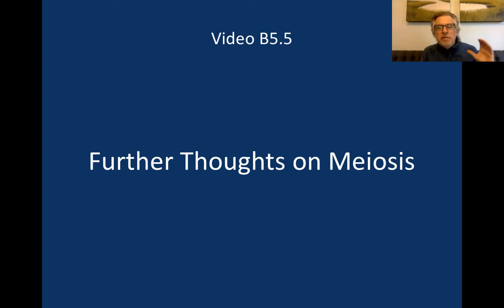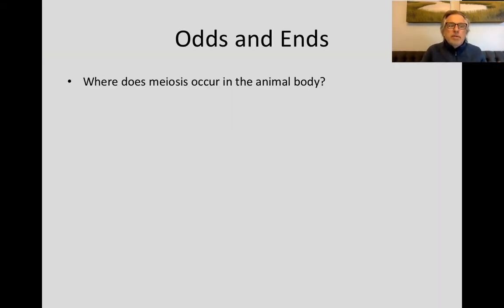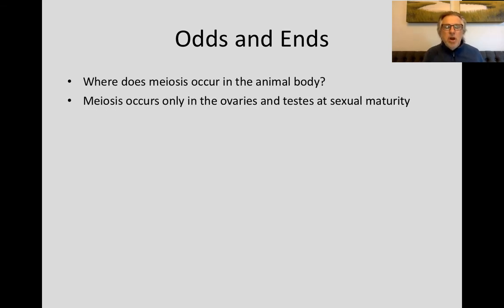Welcome back, everybody. Now that you know about meiosis and its stages and what it is used for, I wanted to develop some further ideas about meiosis. First, let's figure out where meiosis occurs in the animal body. Since its goal is to produce gametes, it occurs in the gonadal tissue, in the ovaries and testes, and it occurs at sexual maturity when gamete formation is actively needed.